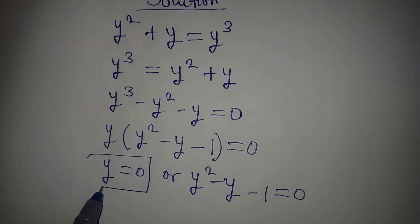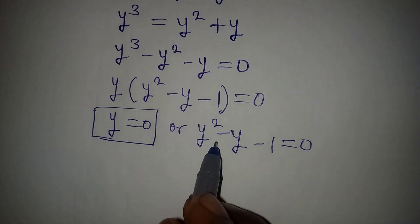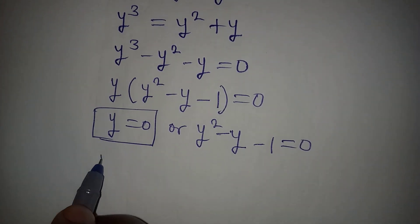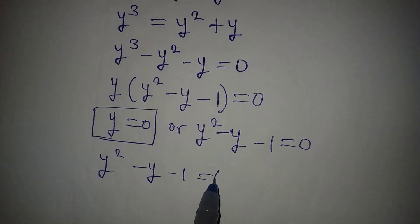Here we already have the first value of y which is 0. So to continue, we focus on this quadratic equation: y squared minus y minus 1 equals 0.